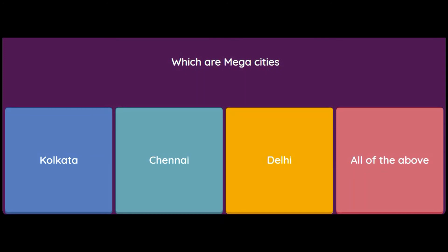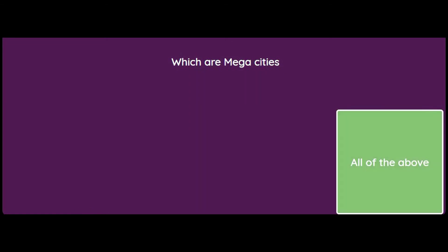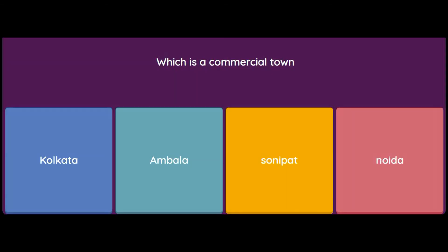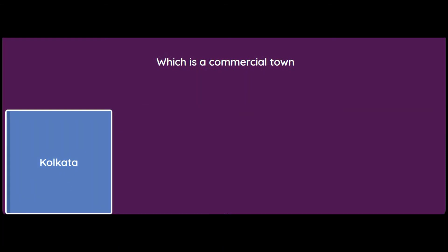Which of these are mega cities? Kolkata, Chennai, Delhi, or all of the above? All three — Kolkata, Chennai, and Delhi — are mega cities, each having a population of more than five million. Which one is a commercial town? Kolkata, Ambala, Sonipat, or Noida? According to the book, Kolkata is a commercial town.